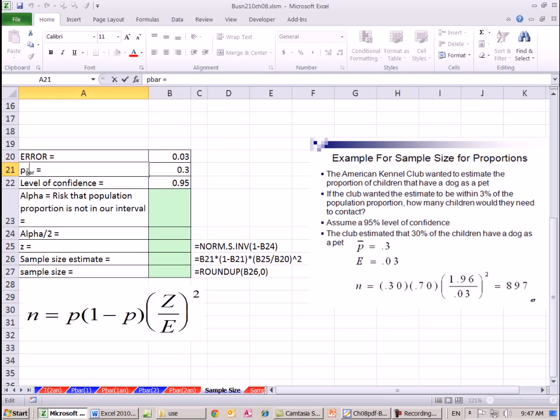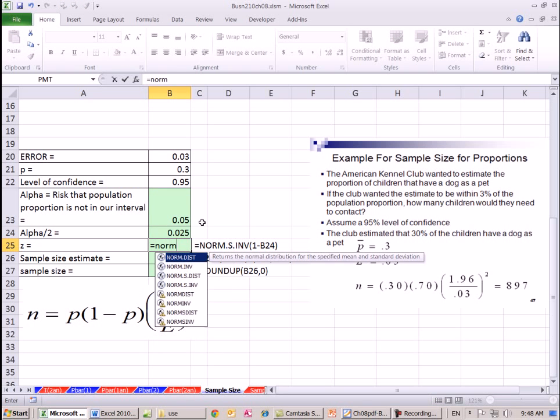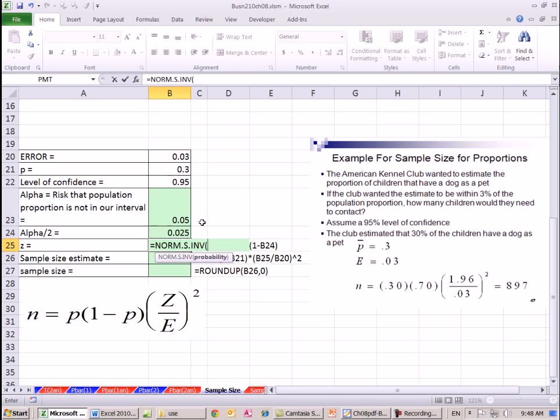Technically, this isn't P bar, because what are we doing? We're calculating the n before we ever do the sample. So we don't have P bar yet. But we have this estimate for population P. All right, our alpha, alpha divided by 2, that'll help us get our z on the upper end, equals norm.s 1 minus alpha on the upper end.